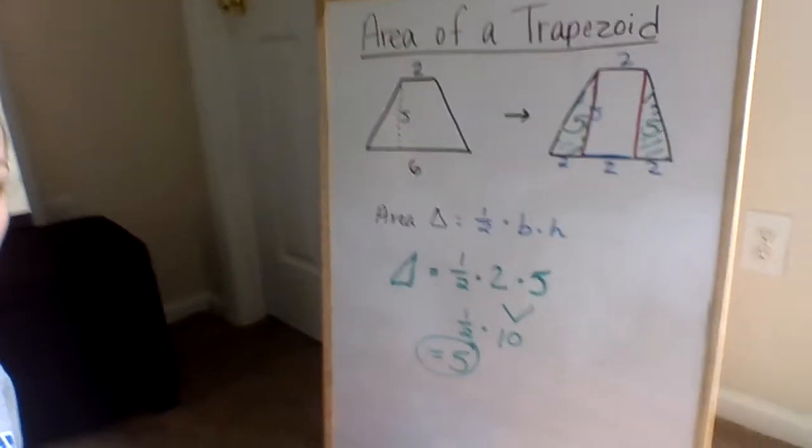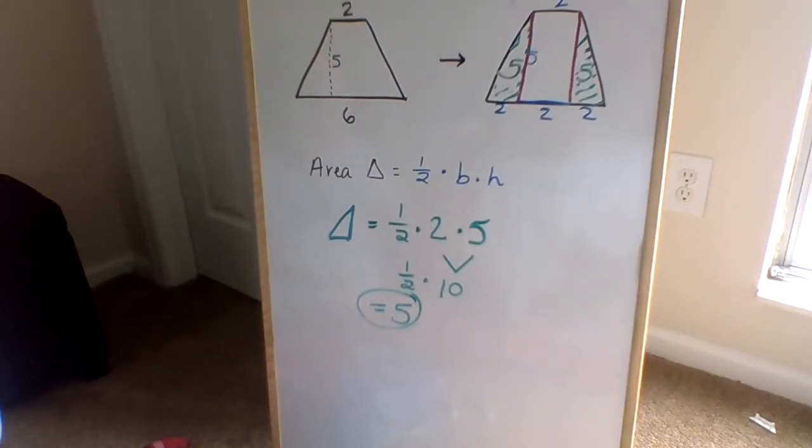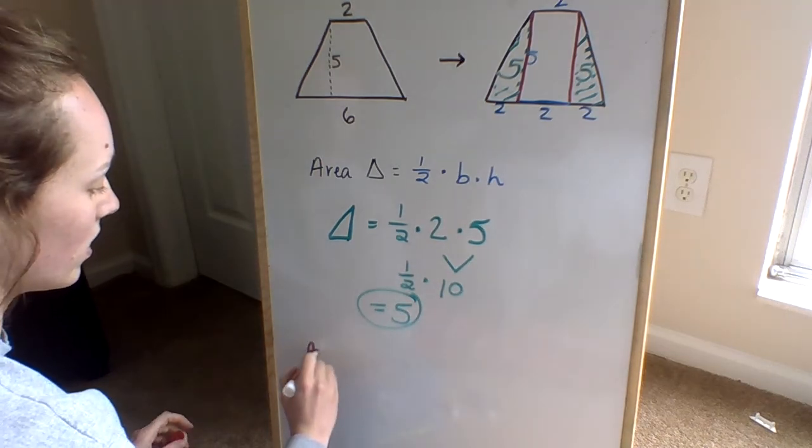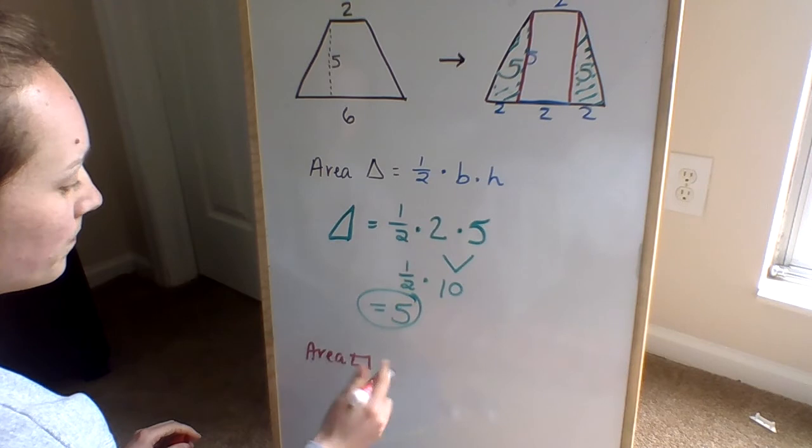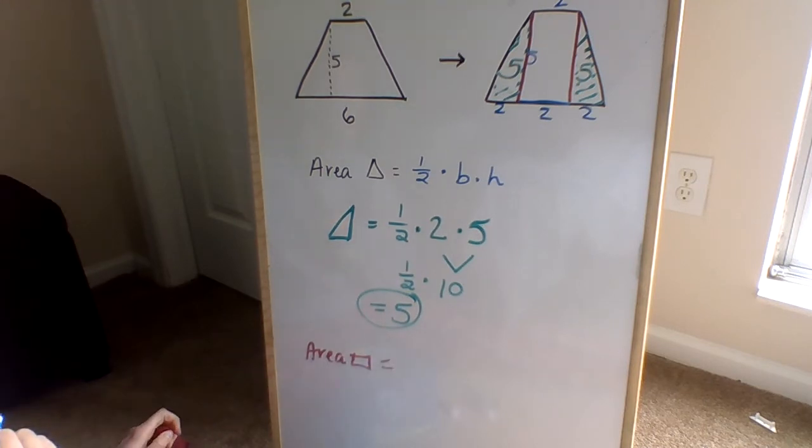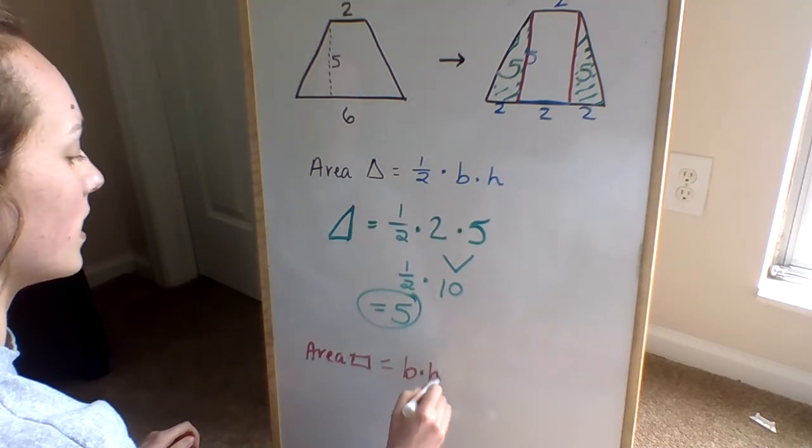Now, moving on to the rectangle part of it. What is the area of a rectangle? Good. It is base times height.